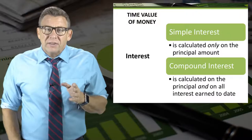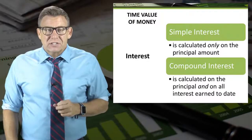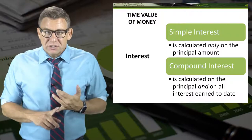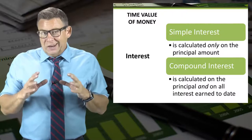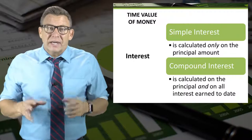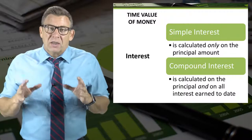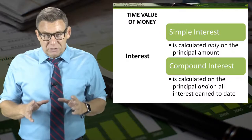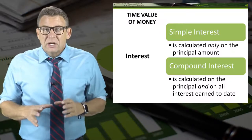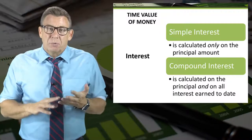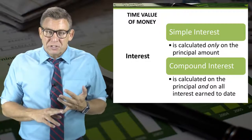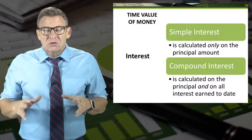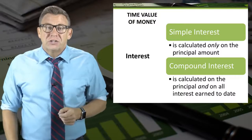Generally, there are two ways to calculate interest. Simple interest is when interest is only calculated on the principal amount. Compound interest is when interest is calculated on the principal amount and on the interest earned to date.